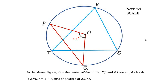Hello and welcome to my channel. In this video we are going to solve an example on circle theorems and chord theorems. In the above figure, O is the center of the circle. PQ and RS are equal chords. If angle POQ is 100 degrees, then find the value of angle RTS.